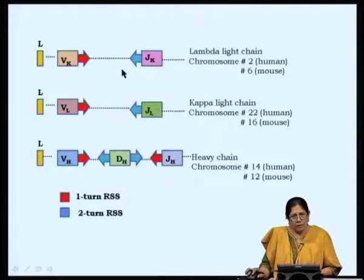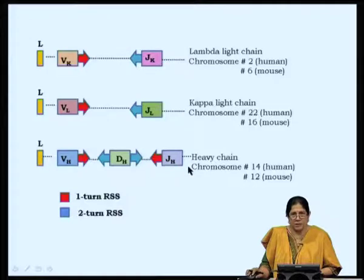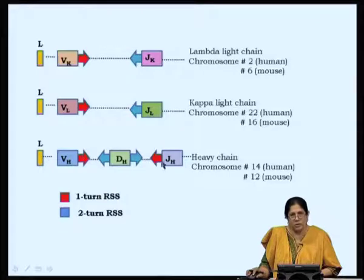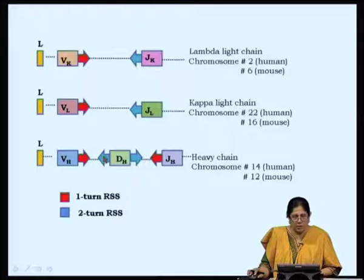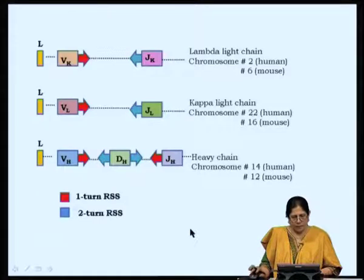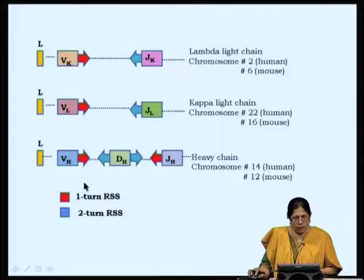In the heavy chain, which has three gene segments — V, D, and J — the D gene segment has RSS on both sides, and these RSS are identical. D has two-turn RSS on both the 3-prime and 5-prime sides, whereas V and J gene segments have one-turn RSS on the 3-prime and 5-prime sides respectively. It has been proved that first, any one of the J on the heavy chain joins with any one of the D, and then any one of the V is recruited. Since the heavy chain has four extra amino acids in the hypervariable region, the D segment — D for diversity — makes the heavy chain slightly more complex than the light chain.